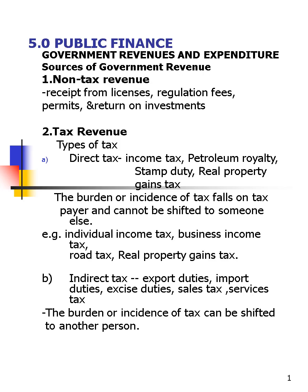Other examples of direct tax are individual income tax, business income tax (corporate tax), road tax, and real property gain tax. Next is indirect tax — export duties, import duties, excise duties, and sales tax. When you go to McDonald's or KFC you have to pay sales tax, and then we also have service tax. With indirect tax, the burden or incidence of the tax can be shifted to another person.